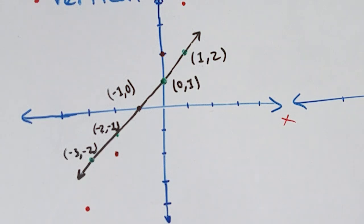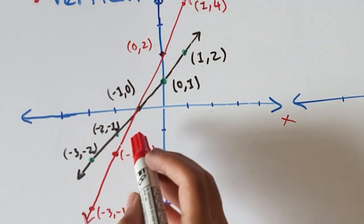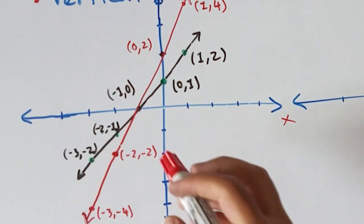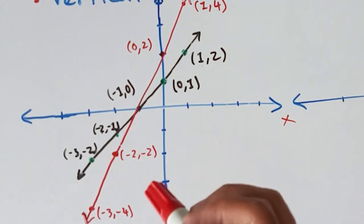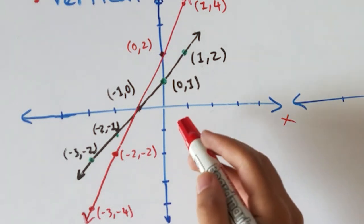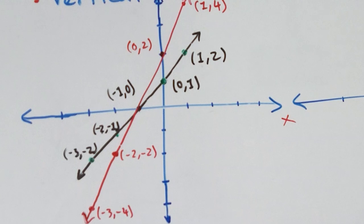Connect the dots and you can see how the function has been transformed — the red graph is the transformed function. The similarity is that the x-intercept remains the same at (−1, 0). The differences are that the y-intercept changed from (0, 1) to (0, 2), and the slope has been doubled from 1 to 2, so the change in y over change in x is now 2 over 1.